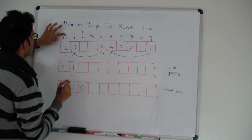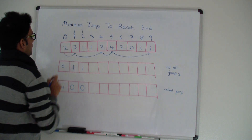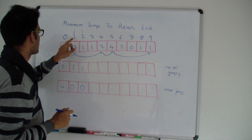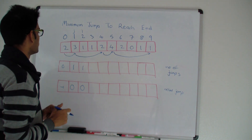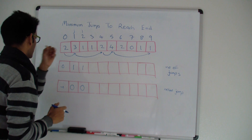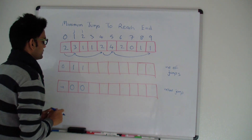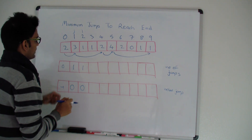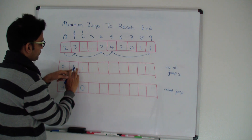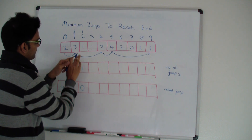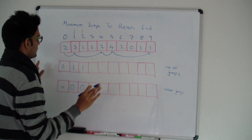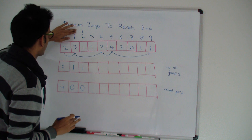Now j becomes one. Can I reach index two from one? Yes, because I can jump three steps from one. The minimum number of jumps would be jumps to reach j (which is one) plus one, equaling two — which is greater than one. So we do nothing.